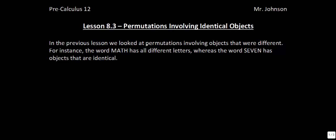In the previous lesson we looked at permutations involving objects that were different. For instance, we had the word MATH, and if you recall, MATH has four different letters. So we'd say that is equal to 4 factorial. We know that 4 factorial is 4 times 3 times 2 times 1, so there's 24 different permutations that we could make with the letters MATH.